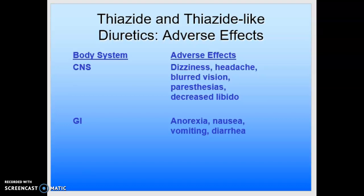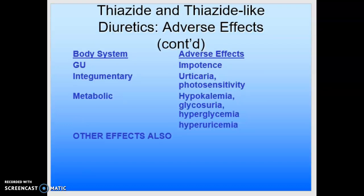Adverse effects by body system: central nervous system — dizziness, headache, blurred vision, paresthesias, and decreased libido. This is one of the big reasons men often don't want to take hydrochlorothiazide. GI symptoms include anorexia, nausea, vomiting, and diarrhea. Genitourinary effects include impotence in men. Integumentary effects include urticaria and photosensitivity. Metabolically, we may see hypokalemia, glycosuria, hyperglycemia, and hyperuricemia. Orthostatic hypotension can also occur. If we are giving other medicines like steroids or amphotericin B, there will be increased potassium loss with hydrochlorothiazide, which can lead to hypokalemia.